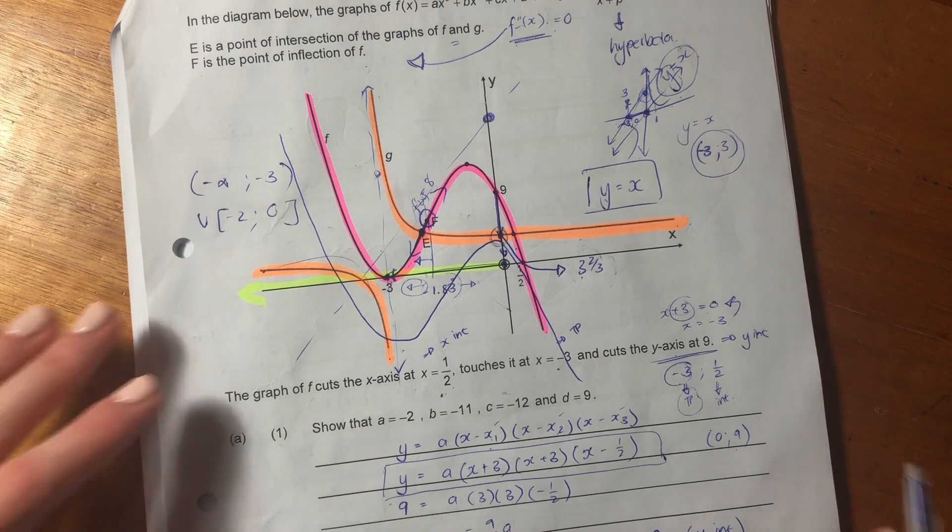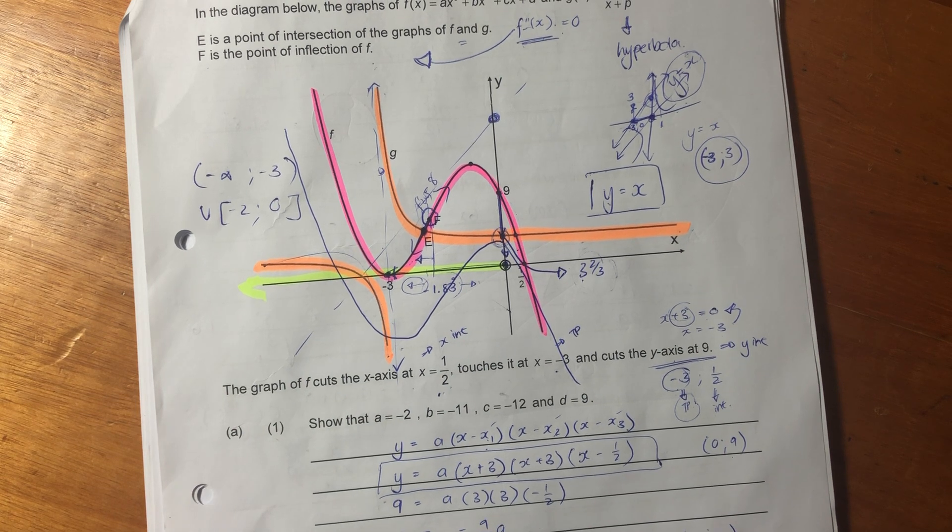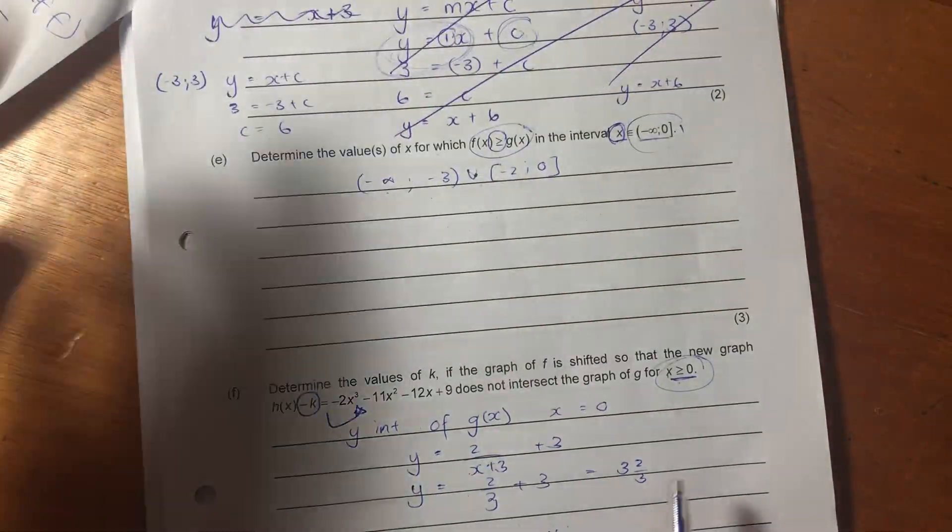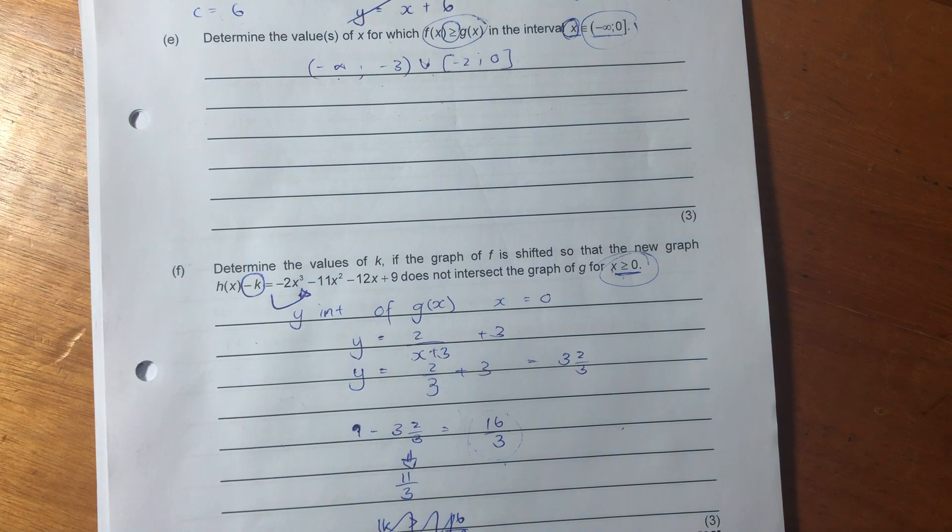So that's the answer there. I've just rewritten it over here, but it's exactly the same. Remember, negative infinity always has a soft bracket because it's a concept. Infinity is a concept. You can't reach it, because you can keep going in the direction forever.